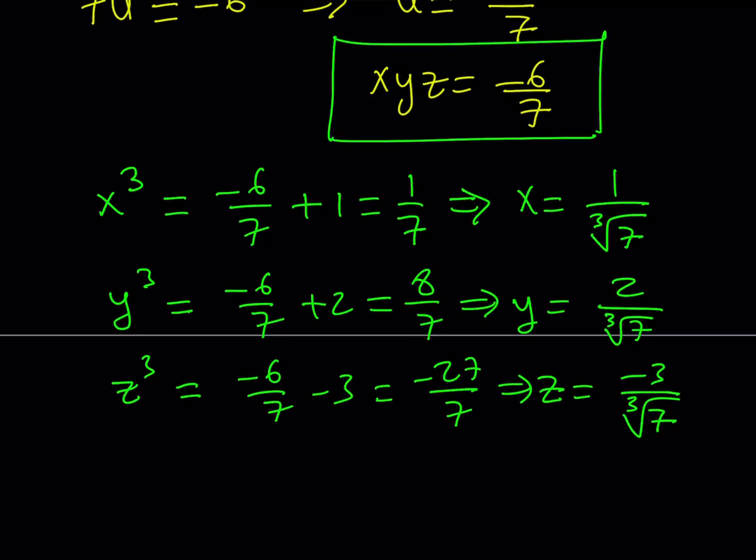If you look at the solutions carefully, you notice that x, y, z are proportional. If 1 over cube root of 7 is a constant, like let's call that x, then y would be 2x and z would be negative 3x. That tells me, can I look at this equation from a different angle?